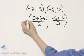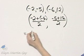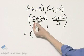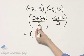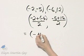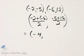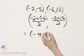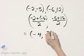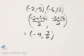And let's go ahead then and write down what this simplifies to. That's negative 2 plus negative 6. That's negative 8 divided by 2. That is negative 4. Negative 5 plus 12, that's 7. I can write that as 7 halves or 3 and a half. I'll write it as 7 halves. So here is my midpoint.